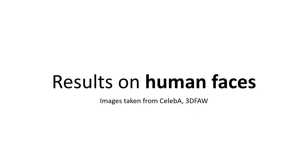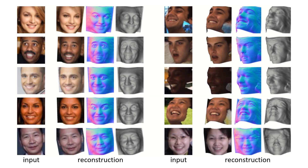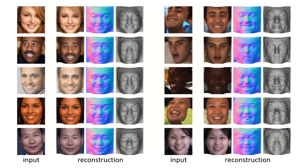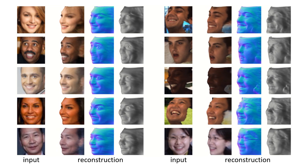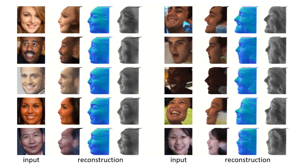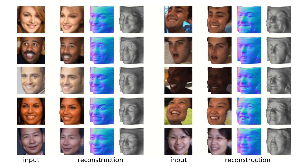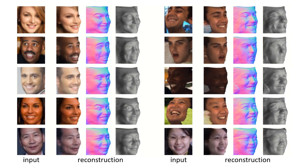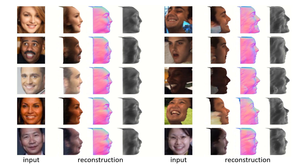Next, we show qualitative results. We first show the results on human faces. For each example, the leftmost image is the input, and the rest three are reconstruction, normal map, and 3D shape respectively.